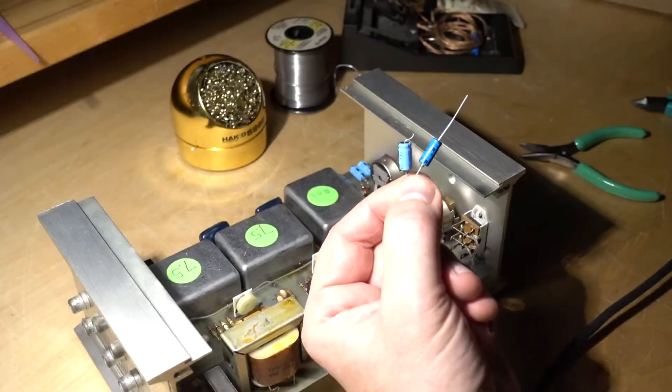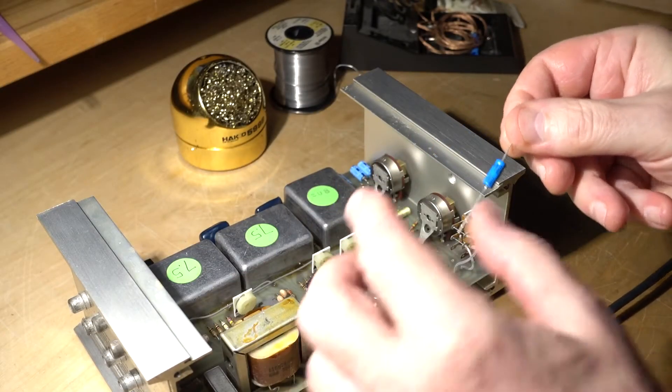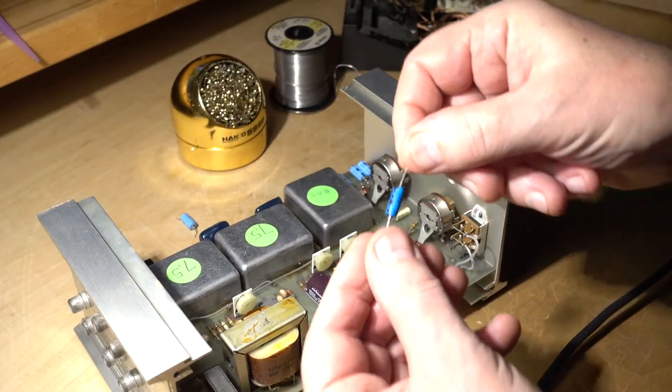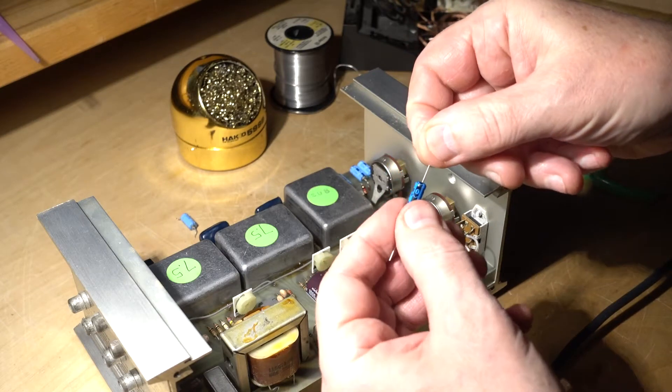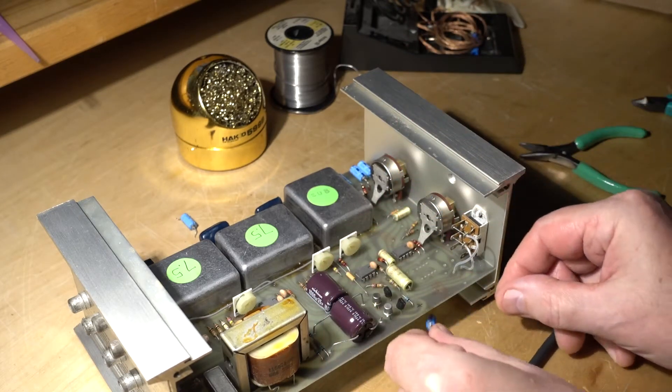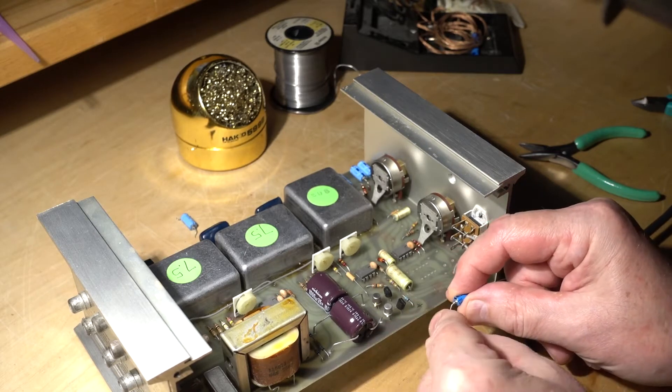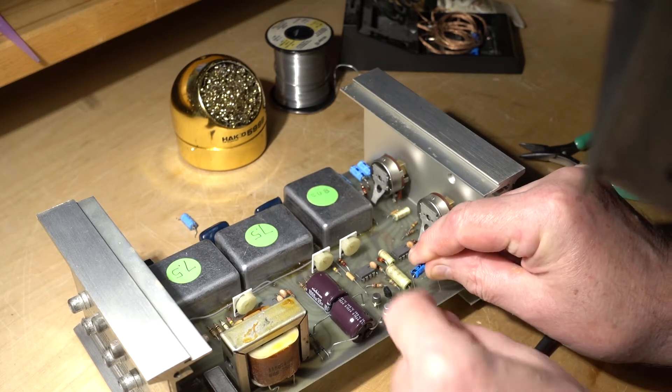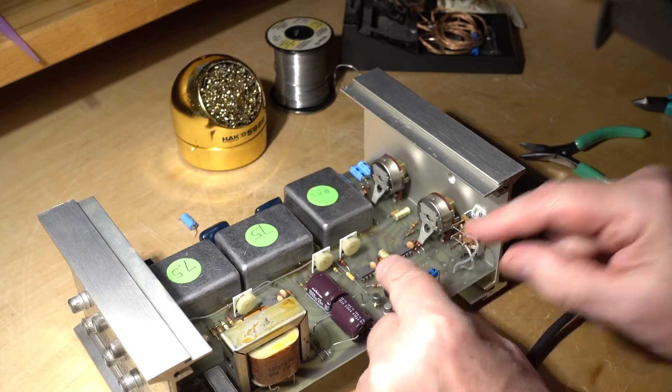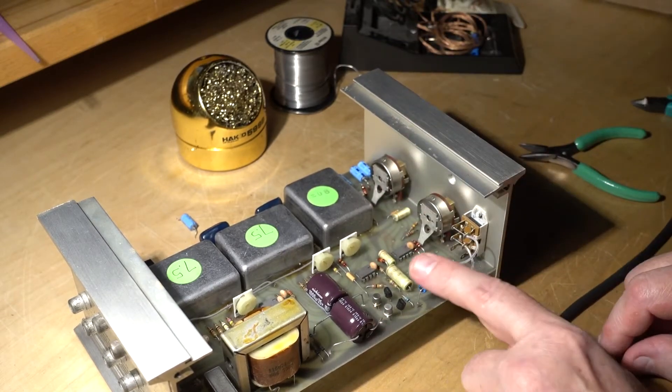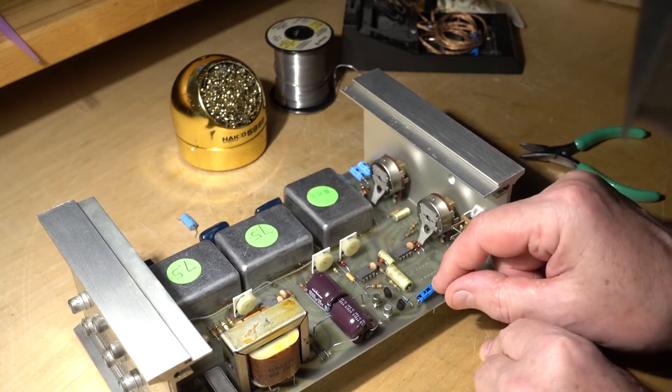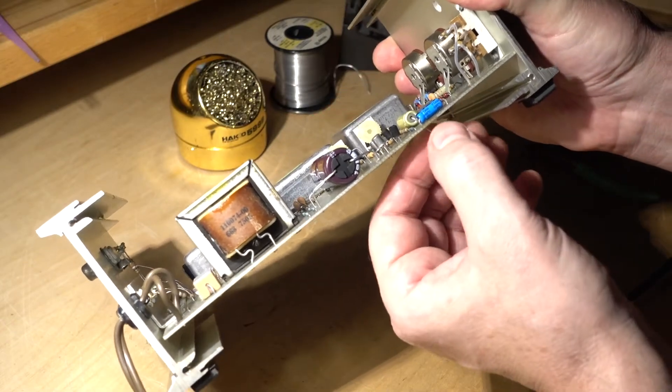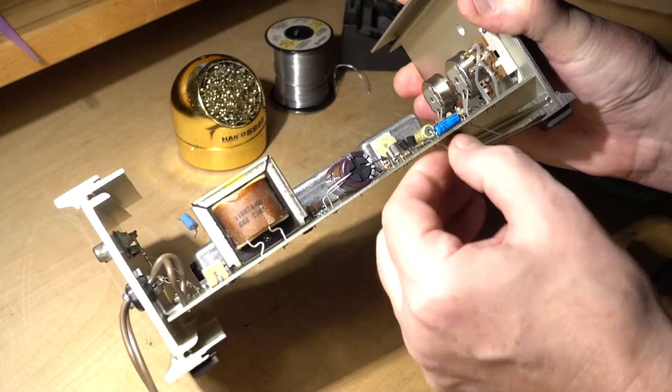That's a new part, about the same size, so it's easy to form the leads. Just bend them approximately, matching the distance between the holes. Again, double check the polarity. Push it in. Make it flush with the board. And sometimes I pull them a little bit to the side like this to keep the part in while soldering.